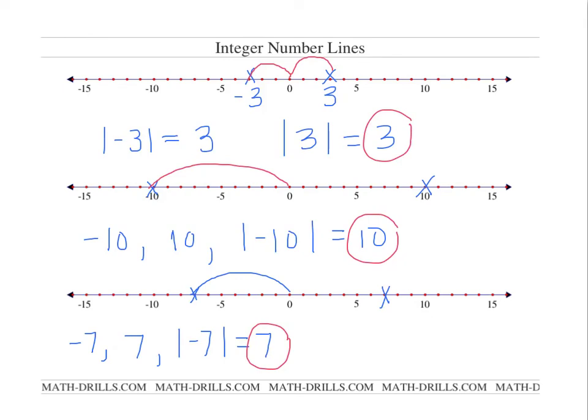Why do you think that is? An absolute value is always positive because distance is always positive. I cannot travel negative 5 feet — I can only travel 5 feet, which is a positive number. I can't travel negative 22 miles. If I am moving, traveling, it is a positive number. So absolute value is always going to be positive because distance is always positive.